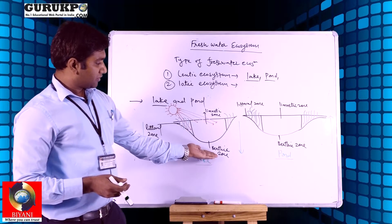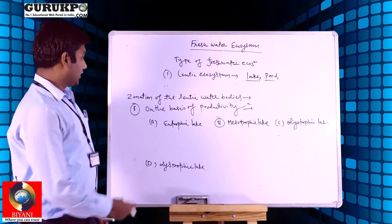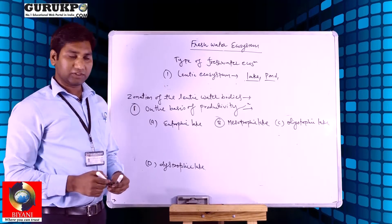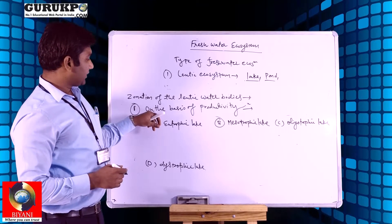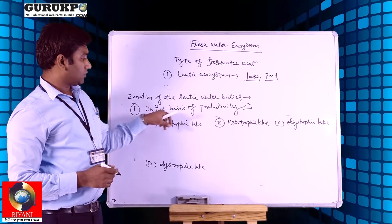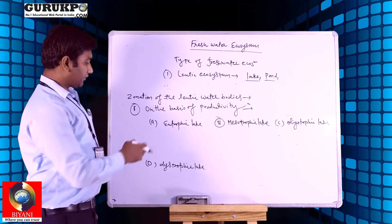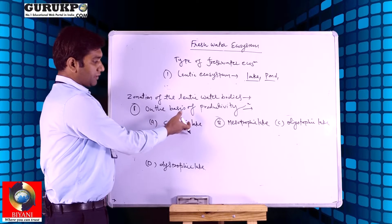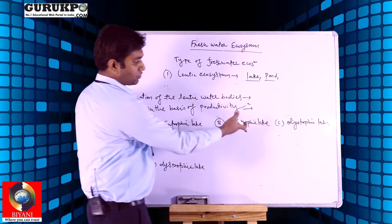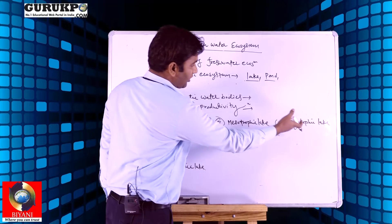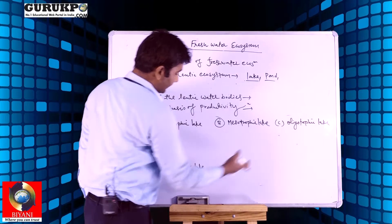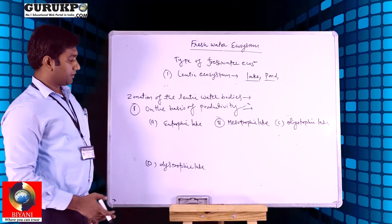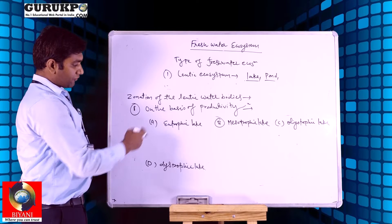These are the simple zones — benthic zonation — of lentic water bodies. On the basis of productivity, lakes are further categorized into eutrophic, mesotrophic, oligotrophic, and dystrophic lakes.